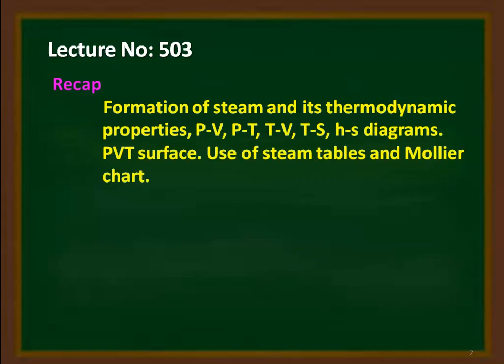We recap from the previous two lectures. We discussed the formation of steam and its thermodynamic properties — wet steam property, dry steam property, and superheated steam properties. We introduced the steam table and the Mollier chart for calculating the properties of steam. We also discussed the PV diagram, PT diagram, TV diagram, temperature-entropy diagram, enthalpy-entropy diagram, and PVT surface, along with the use of the steam table and Mollier chart.